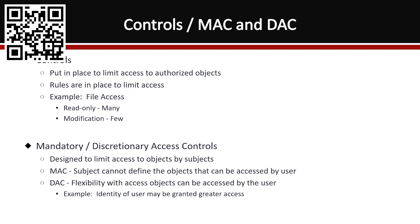Mandatory and discretionary access controls are designed to limit access to objects by the subjects. With MAC — mandatory access control — the subject cannot define what objects can be accessed; it specifically states what can and cannot be accessed by the user. If there's a computer system you don't want most users to have access to, MAC ensures only a specific set of people have that capability. With DAC — discretionary access control — you get much more flexibility, where the identity or role of the user may be granted greater access.